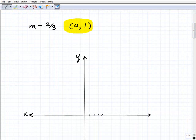For example, we'll plot that out. 1, 2, 3, 4 on the x, 1 on the y. So we know that (4, 1) is a coordinate or a point that's on the line.